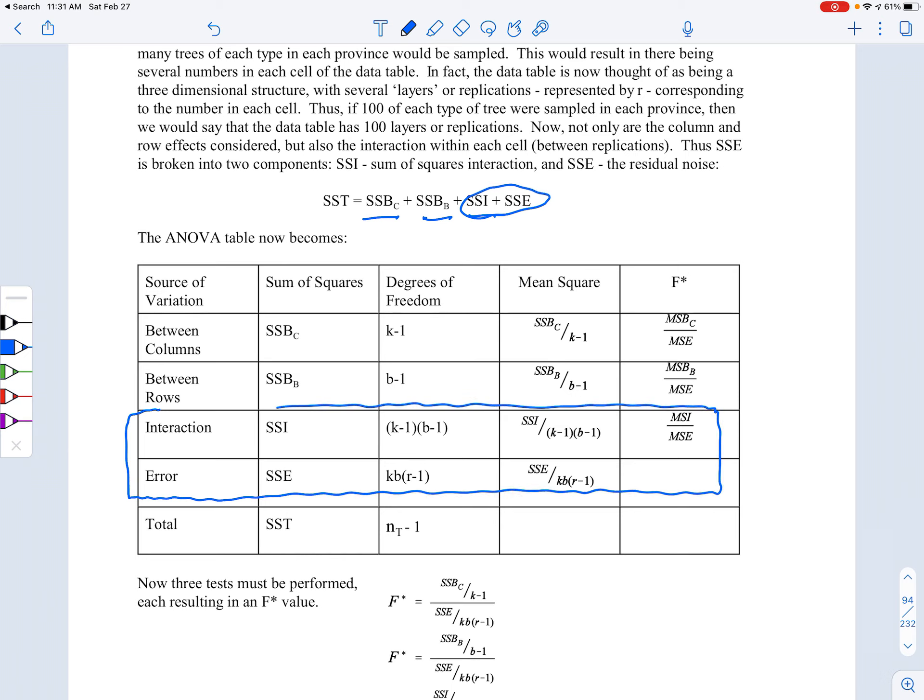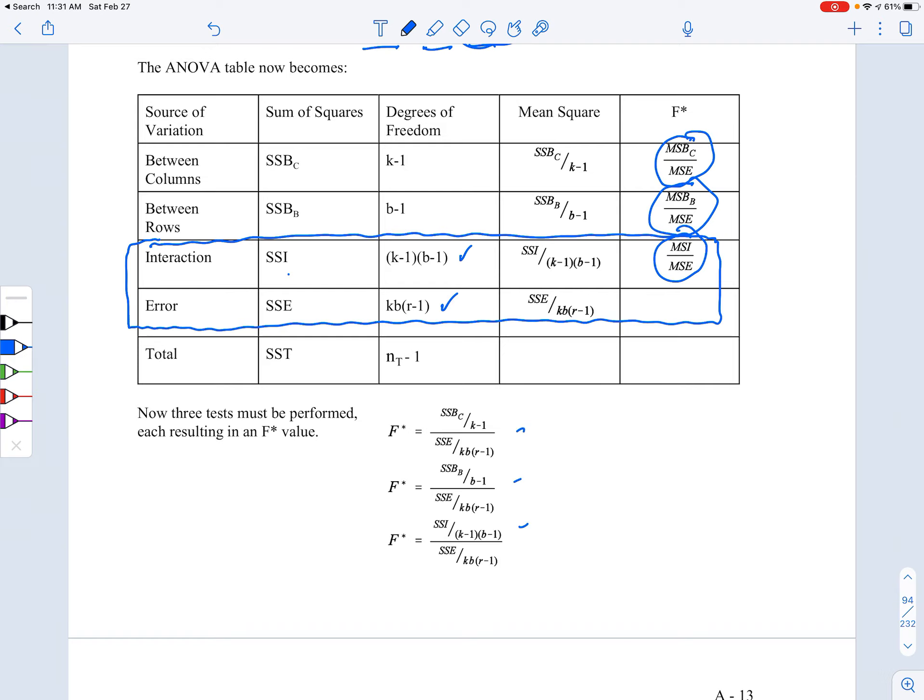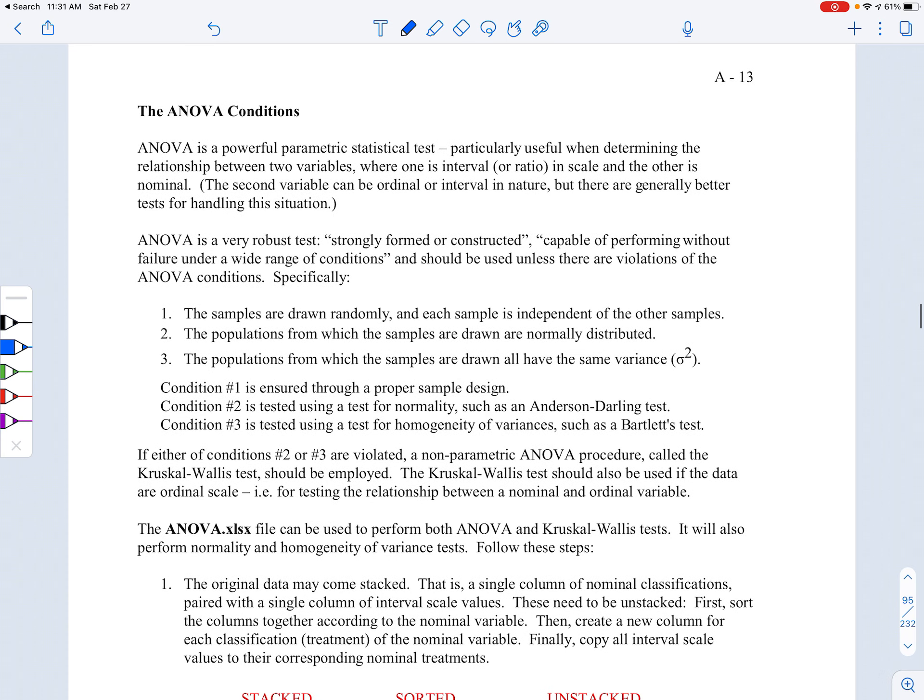That means taking that SSE term here and splitting it into two rows, so you've got the SSE for the interaction and then the SSE. That gives you actually three tests here, which is looking at the column effects - in this case the provinces - the row effects or block effects, which are the type of trees, and then the interaction, which is actually looking at the pine trees themselves. There's differences between them, and so we take a look at those. That is three different tests that we have here.